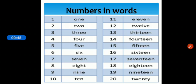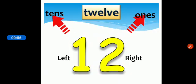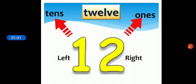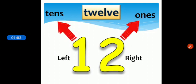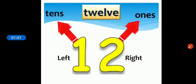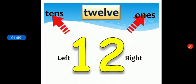You can see on your screens numbers from 1 to 20 in figures and in words. Students, this is number 12. 1 is on the left side, that means 1 ten, and 2 is on the right side, that means two ones. So number 12 has one ten and two ones.